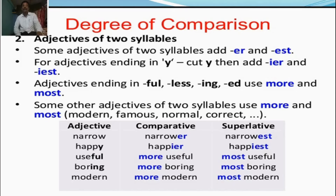Adjectives of two syllables. Some adjectives of two syllables add ER and EST to form the comparative and superlative degrees. Adjective — comparative degree form.